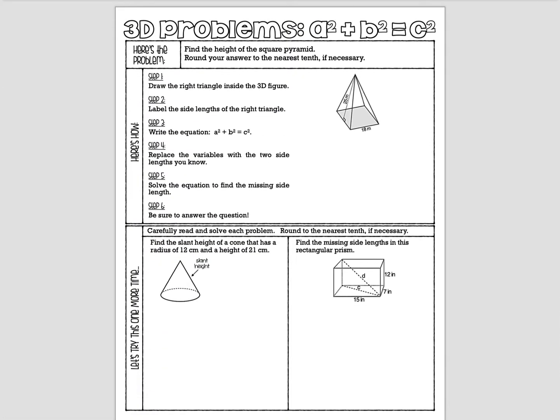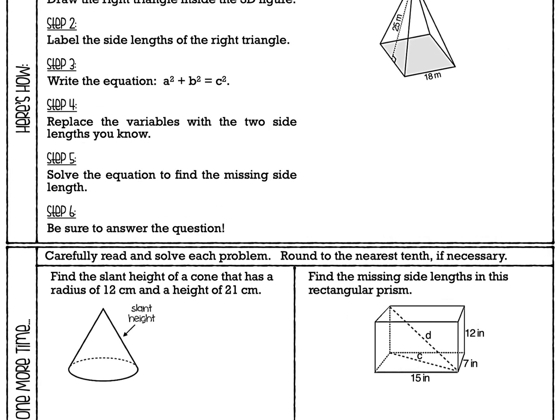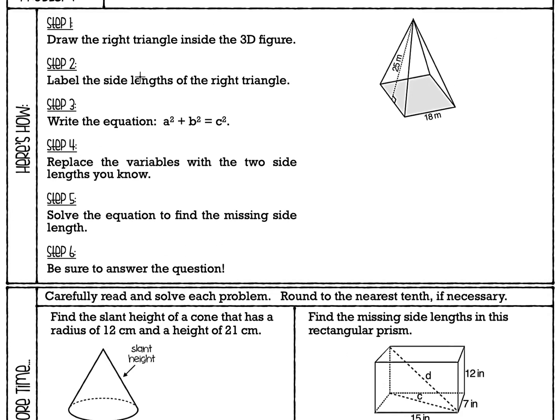So this is the worksheet we're going to be looking at. I'm going to put the whole thing up here so you can see it, and then I will zoom in. This is the title of our worksheet: it's called 3D Problems, A² + B² = C². Grab a hold of this worksheet if you have a copy, and if you don't, you can still follow along and learn how to do these problems with us.